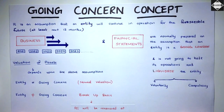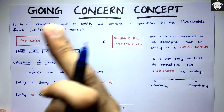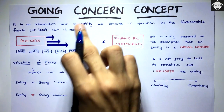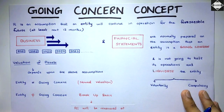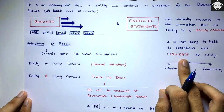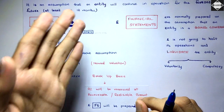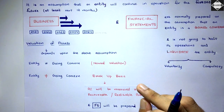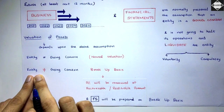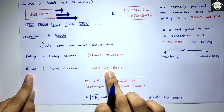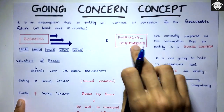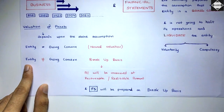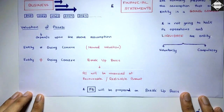So to summarize the going concern concept: we assume the entity will continue its operations for the foreseeable future — at least the next 12 months — and financial statements are prepared on this going concern assumption. If the entity is a going concern, normal valuation on a historical or other basis is used. If it is not a going concern, the breakup basis must be used and everything is recorded at recoverable or net realizable amounts. That's all for this video — see you in the next one!